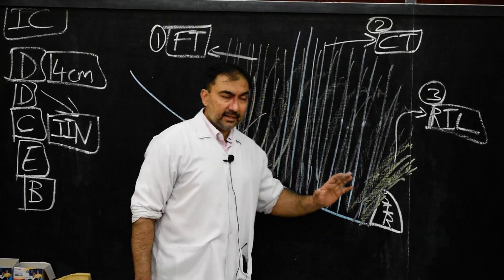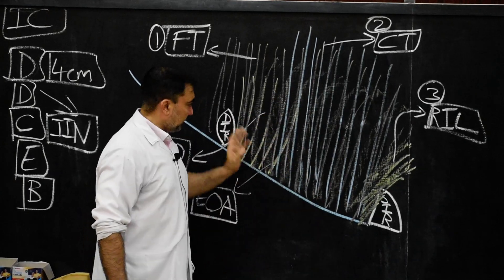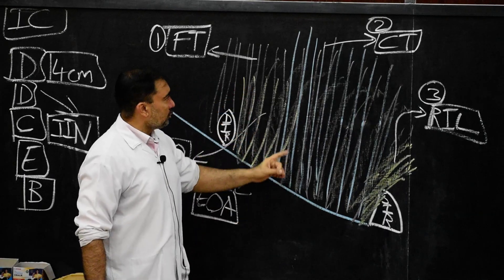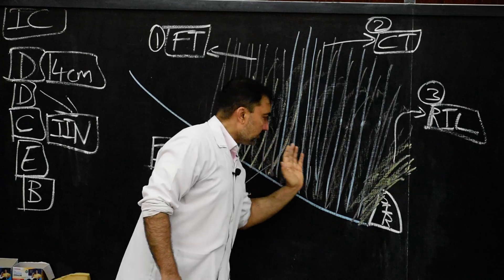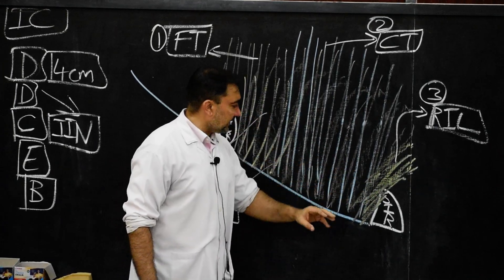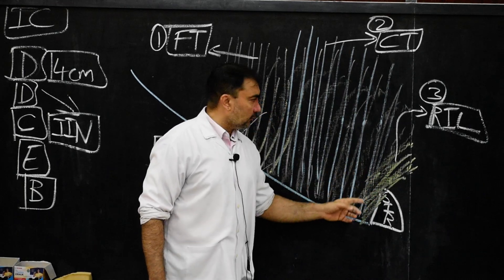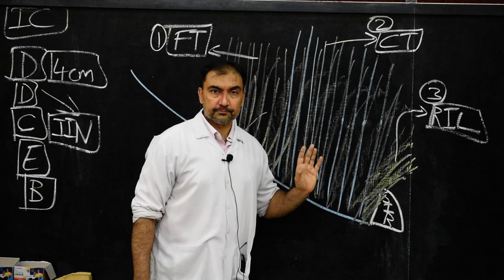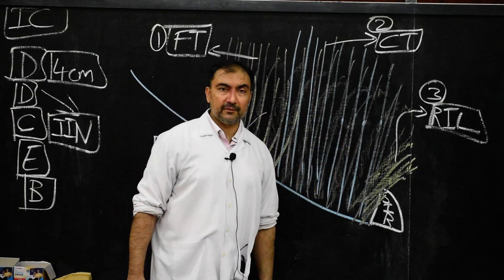Once again I repeat: the posterior wall of the inguinal canal is completely formed by fascia transversalis (number one); it is formed by conjoint tendon or falx inguinalis in the medial half of the posterior wall (number two); and medial one-fourth of the posterior wall is formed by the reflected part of the inguinal ligament (number three). These are the three structures forming the posterior wall.